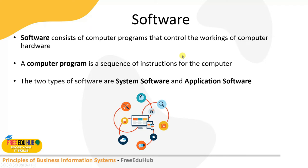Software consists of programs that control the working of a computer. A computer program is a sequence of instructions for a computer. Two types of software exist: system software and application software. Whenever we buy any program, it usually comes with documentation describing the program functions, which help the user to operate the computer system.